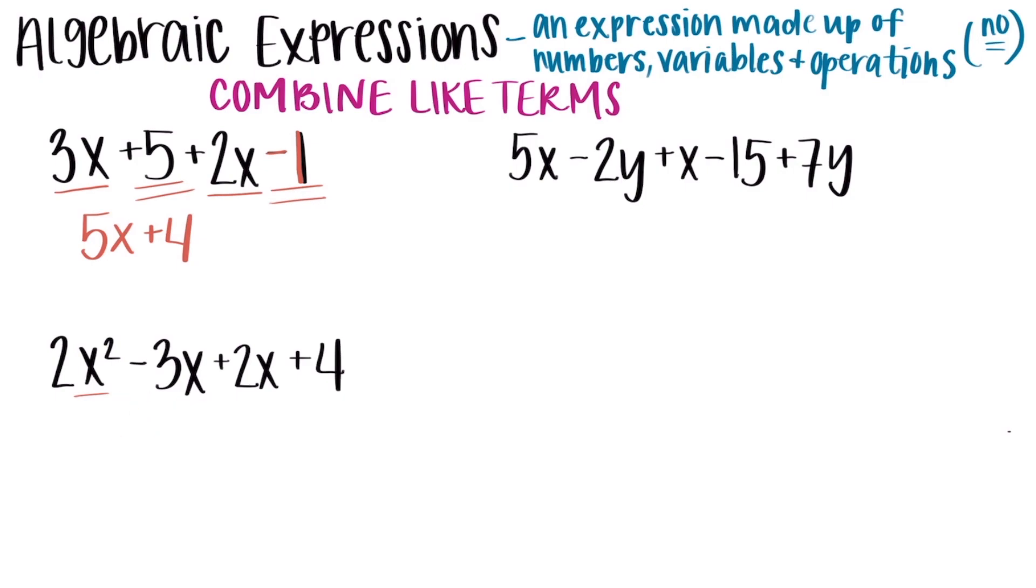Notice I cannot combine 5x or 4 together, so that is my simplified version. Moving on to my second example, I cannot combine that x squared and that x. Those are not the same thing. I can combine my negative 3x and my positive 2x. Negative 3 plus 2 gets me negative 1x, or we should know that means just the same thing as negative x.